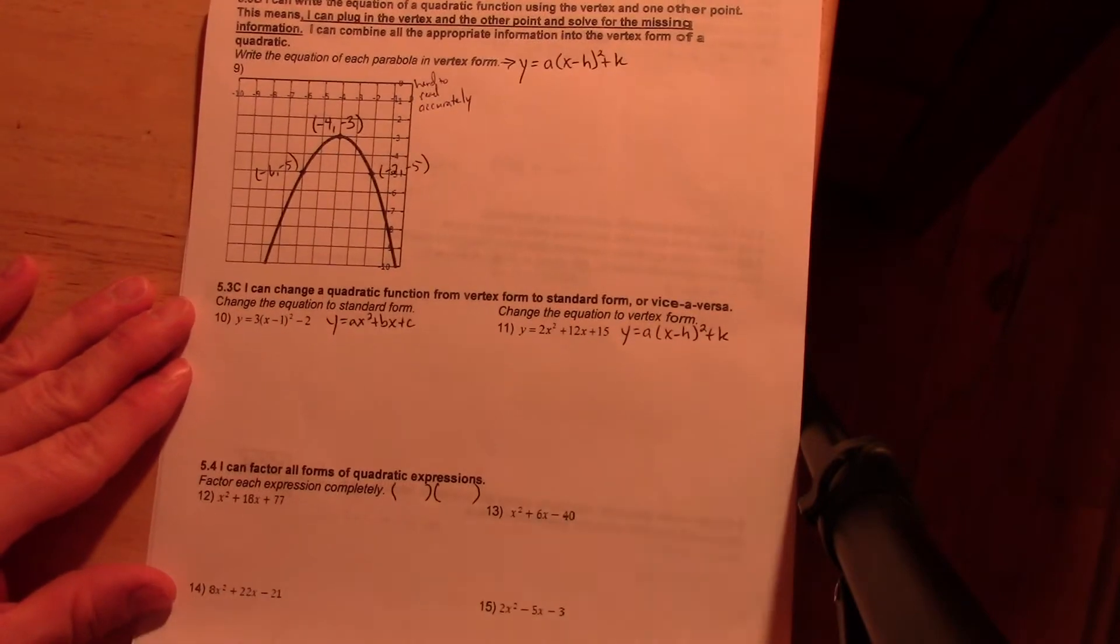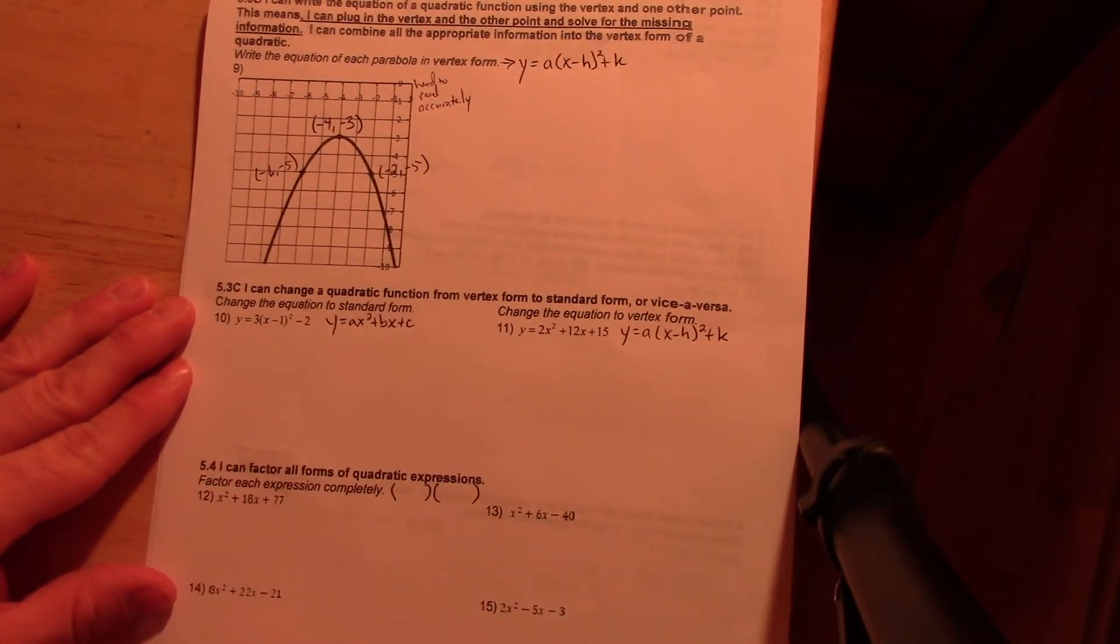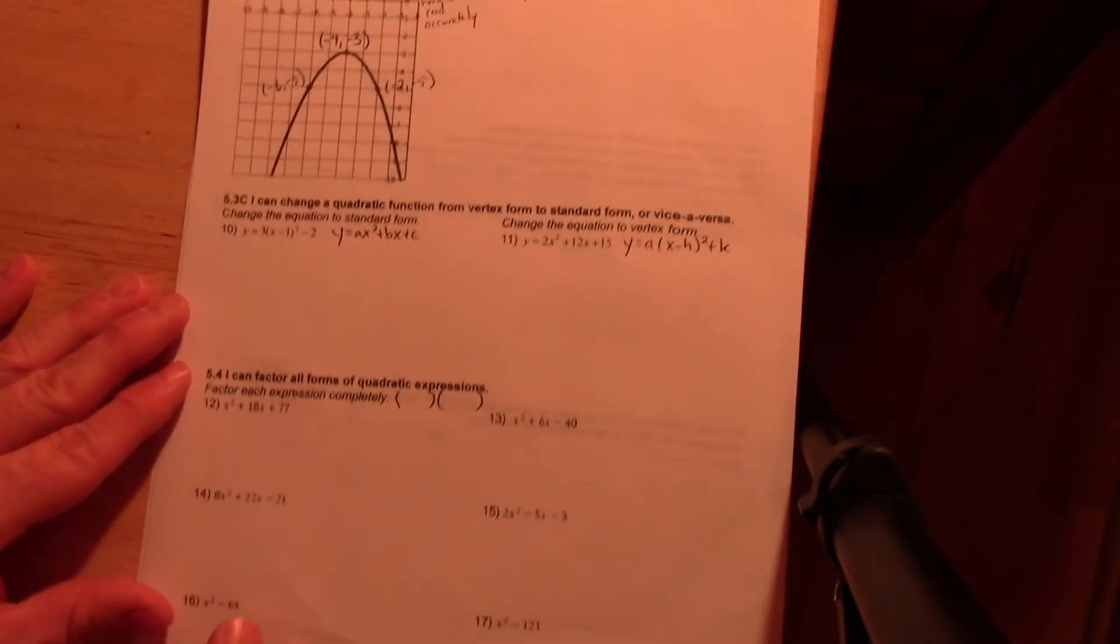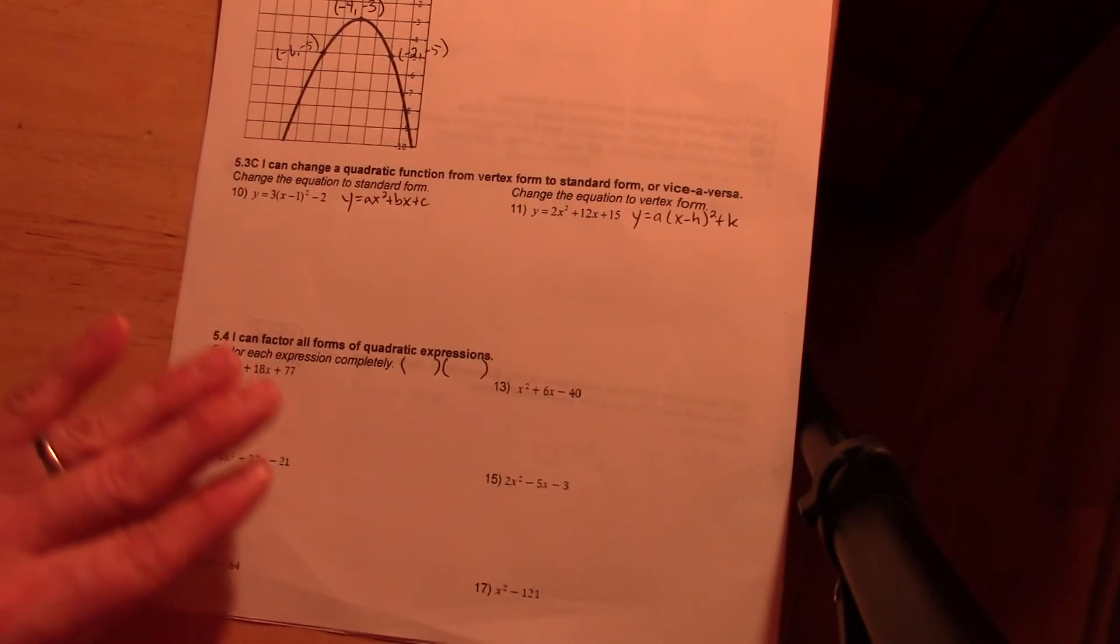Changing from vertex to standard form and vice versa, I wrote down the two forms that you need to write them as. I'll talk about those as we go and then for 12-17 you have the factors that you need to do there. Next page.